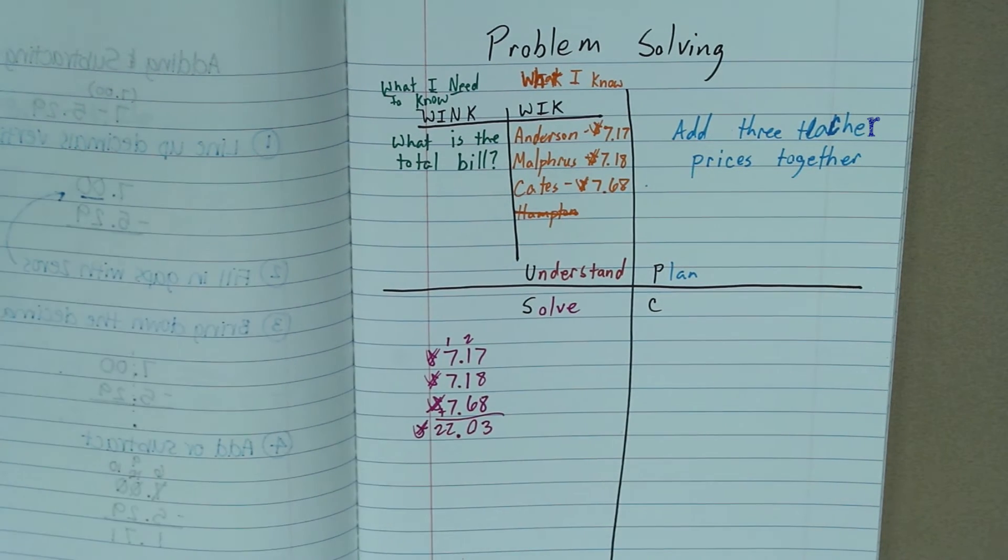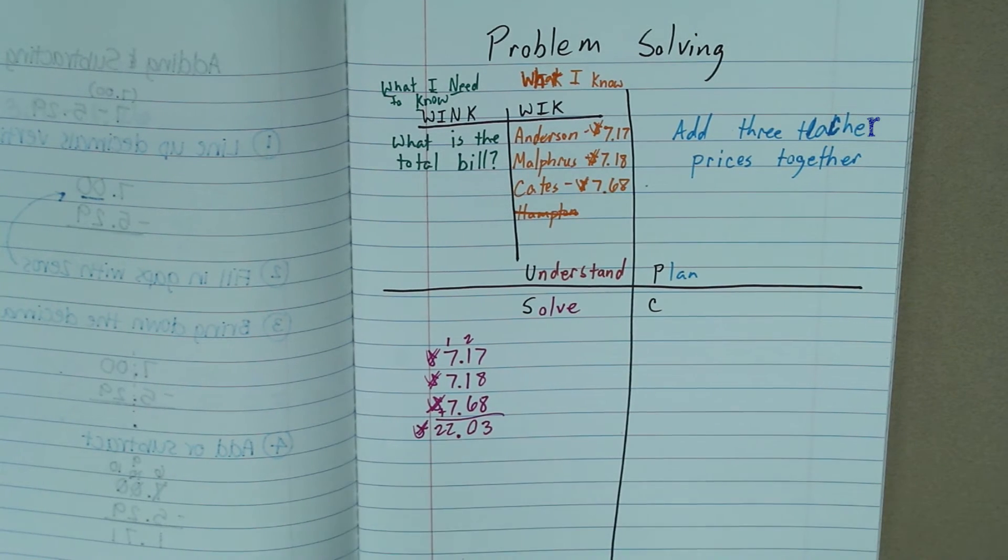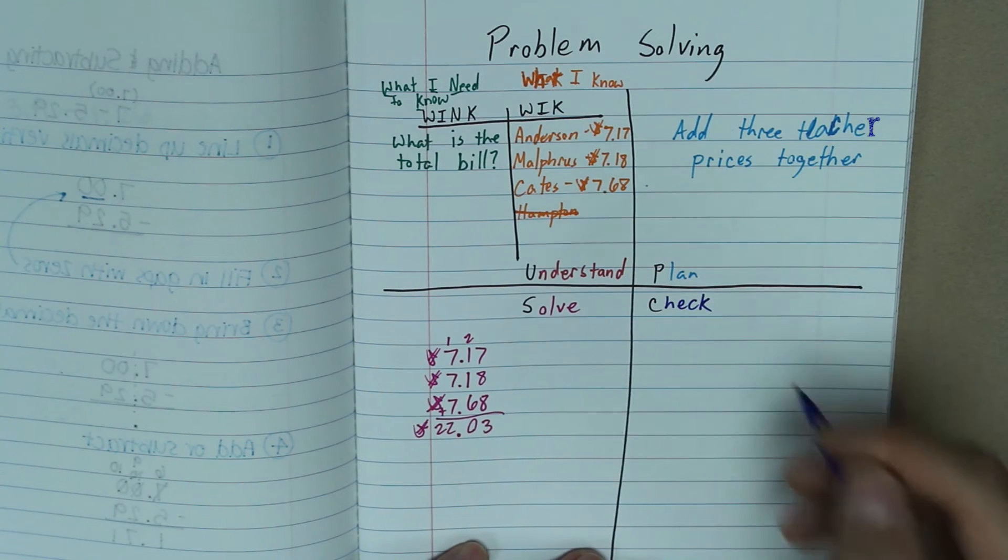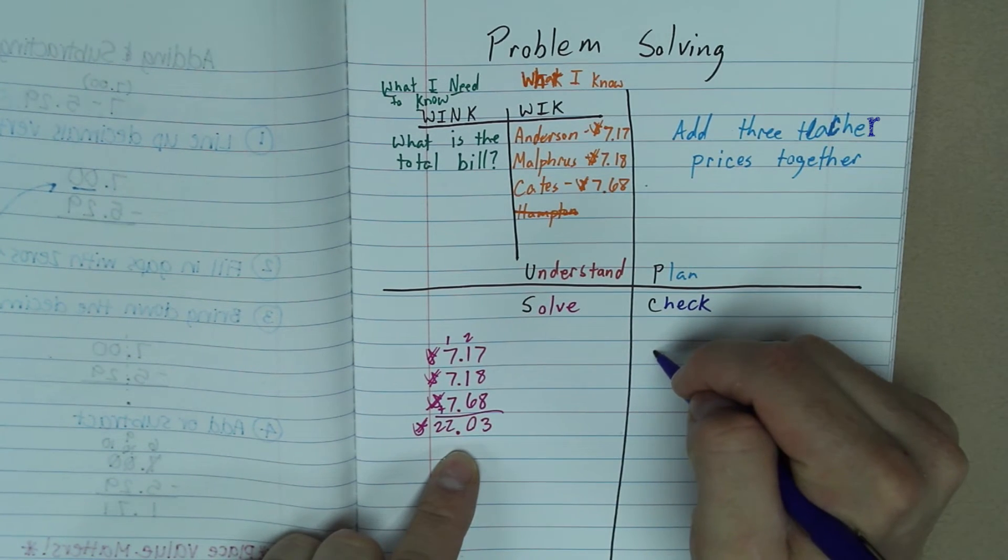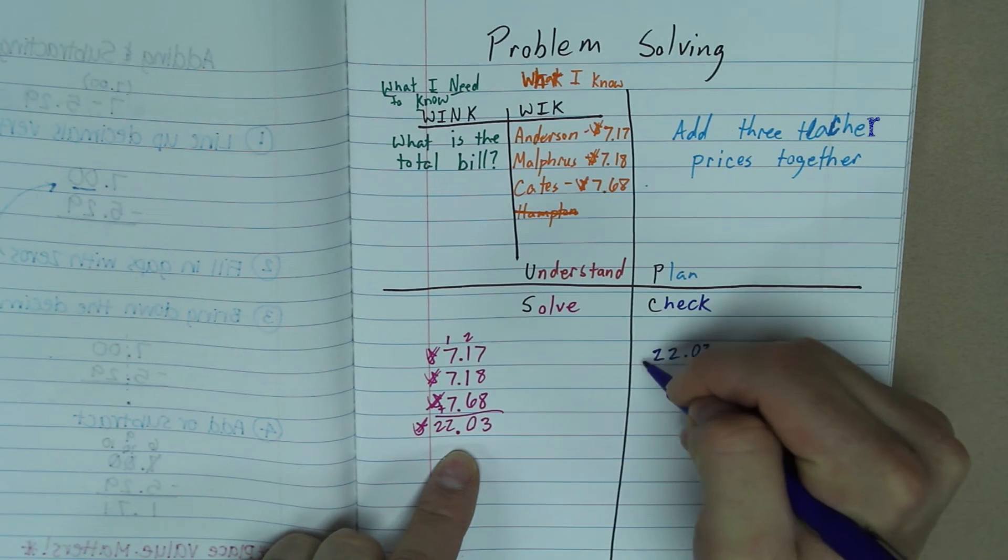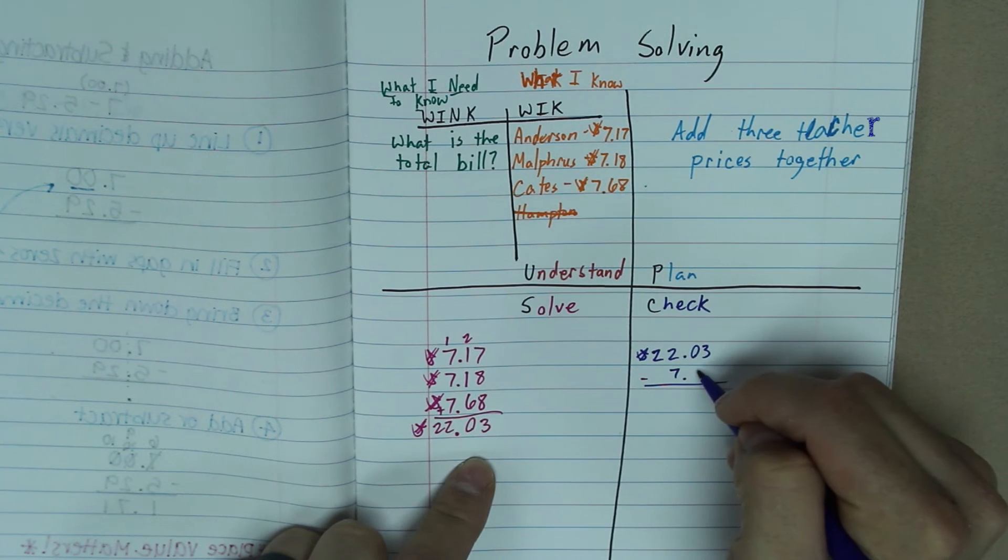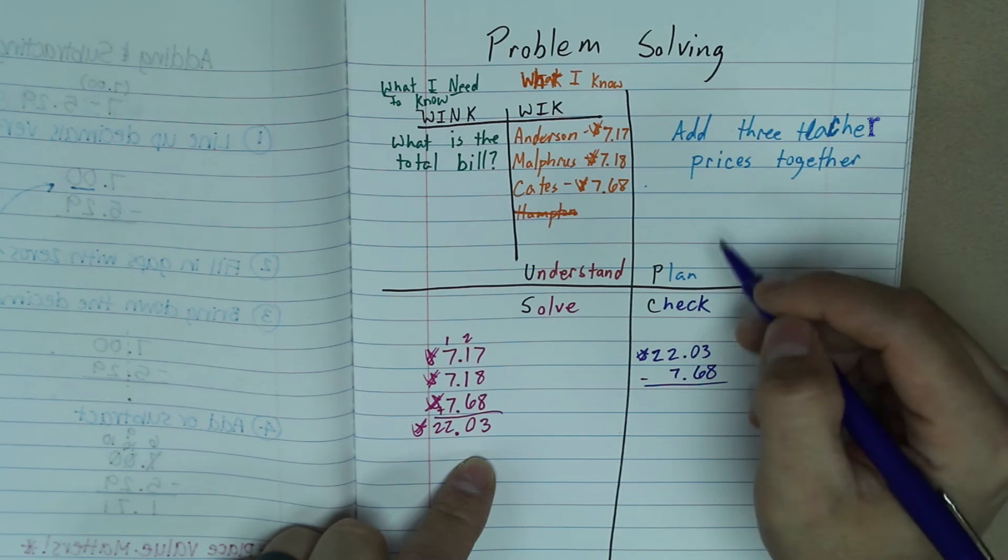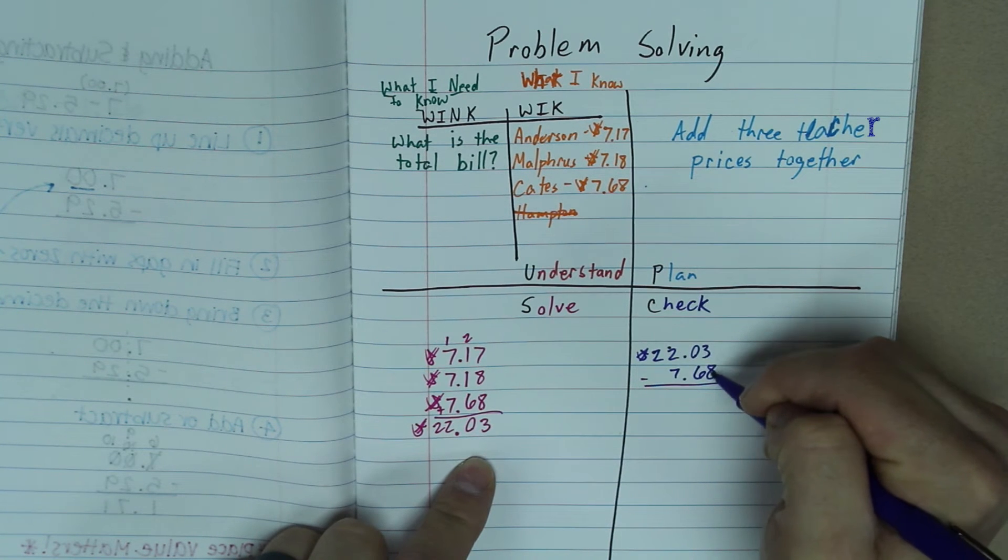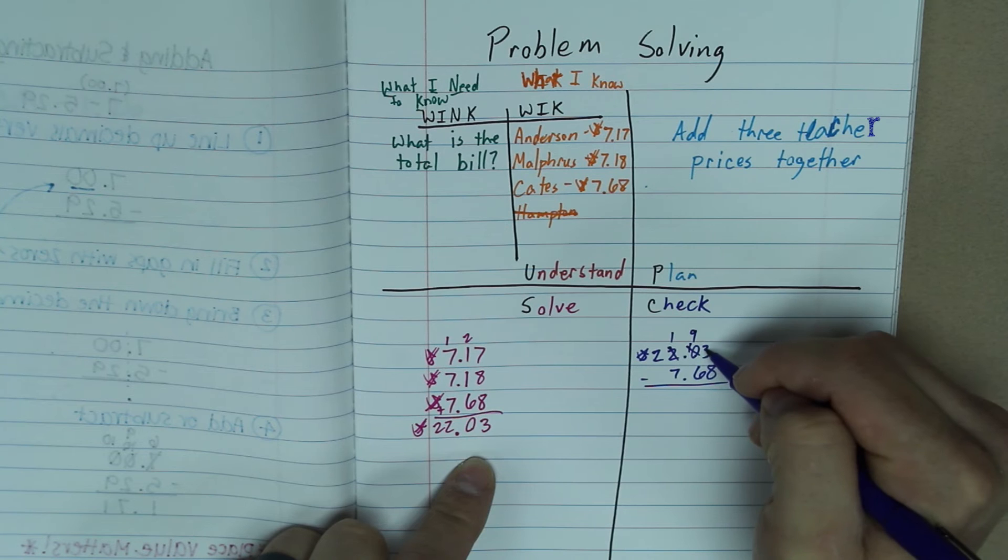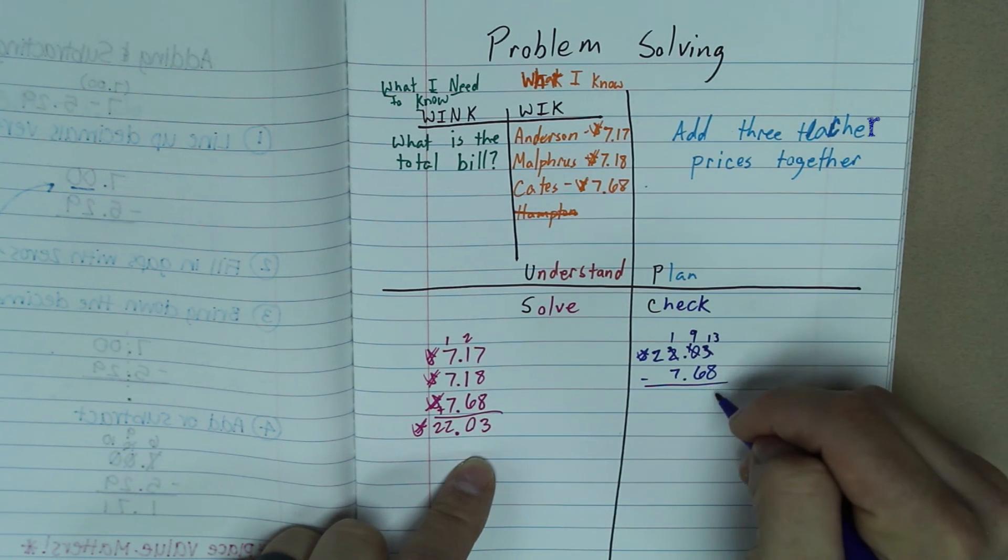But we have one more step that we're going to complete. And this last step is going to be check. So we are going to check to make sure it's right. So when we check, we're going to do the inverse operation. So I'm going to start with our total over here to check to see if we did it correctly. $22 and 3 cents. And I'm going to subtract one of these at a time. So minus $7 and 68 cents, which will end up, we have to regroup here. So 3 becomes a 13. 13 minus 8 is 5. 9 minus 6 is 3. Bring down the decimal. 11 minus 7 is going to be 4.